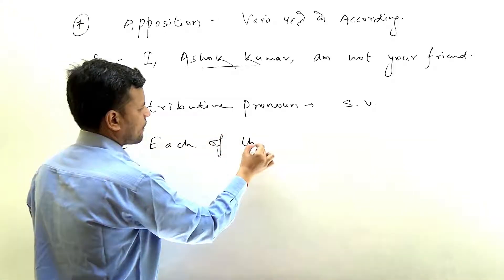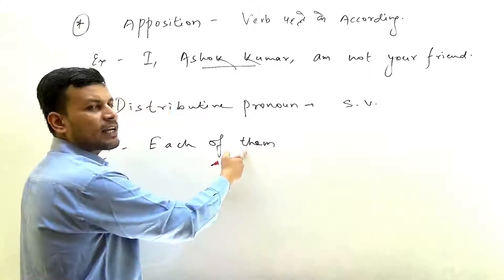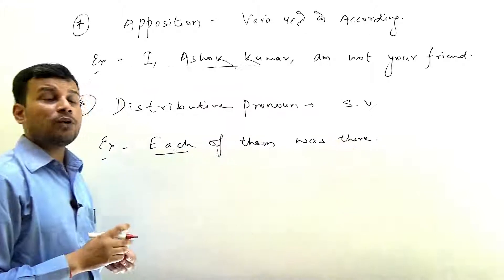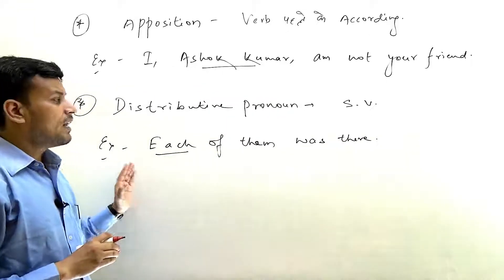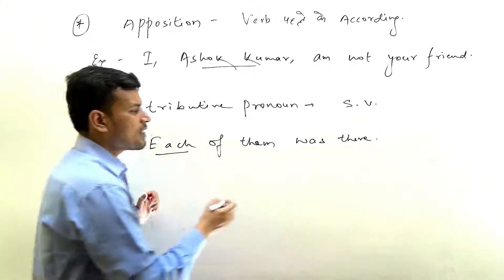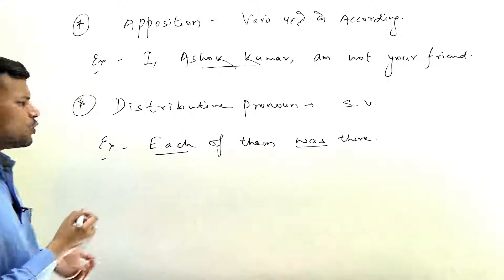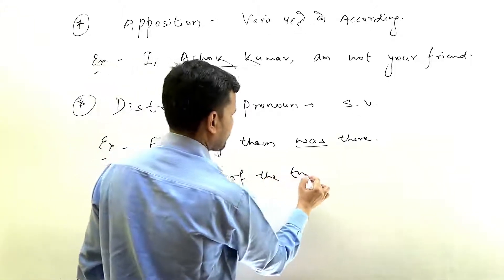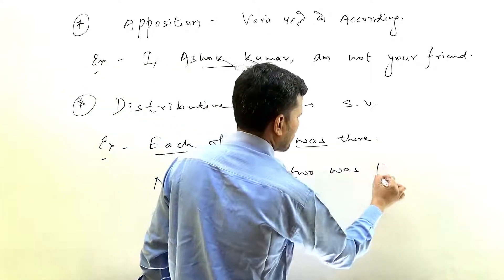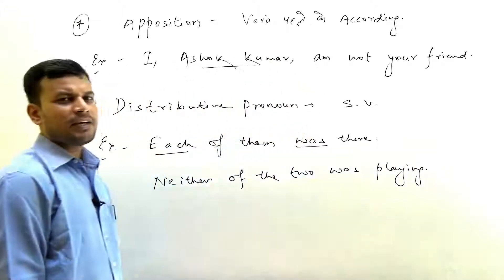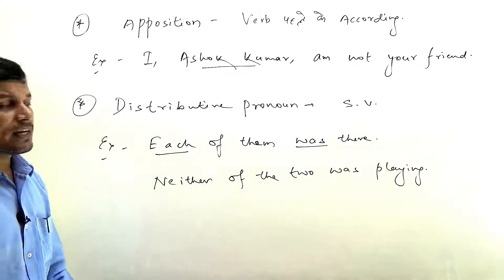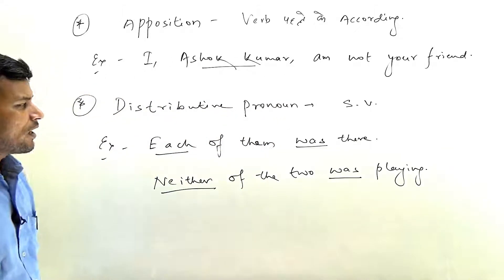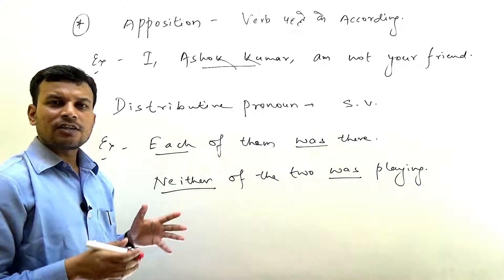For example: 'each of them was there' — here we don't look at 'them' for verb agreement; we look at 'each' and treat it as singular, so singular verb 'was' is used. Another example: 'neither of the two was playing,' meaning neither of the two was playing. The subject 'neither' takes singular verb 'was.' So each, every, either, neither are singular and take singular verbs.